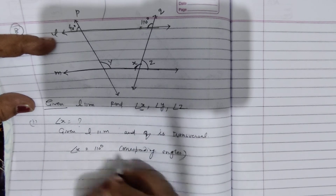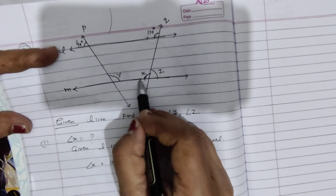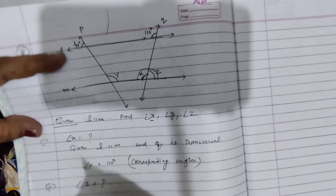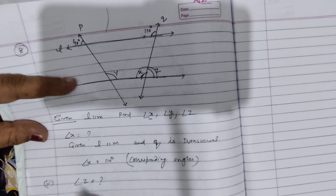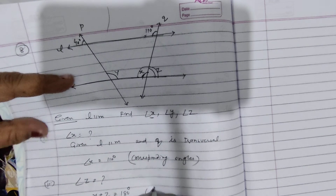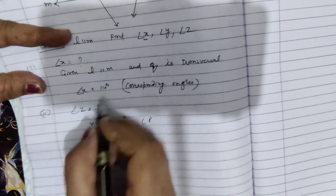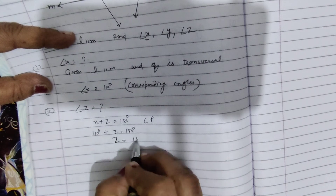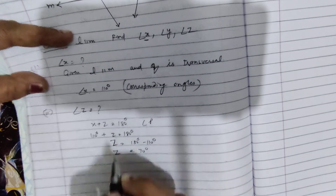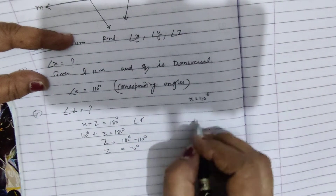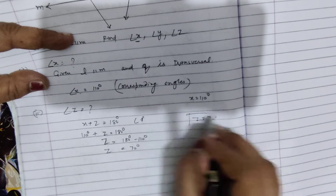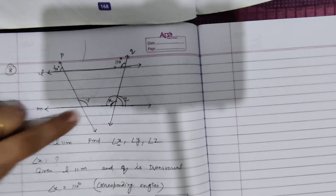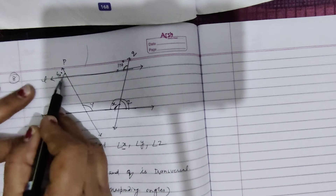Now X and Z form a linear pair. Second part: find Z. X plus Z equals 180 degrees — linear pair. X is 110 degrees. So Z equals 180 minus 110, that is 70 degrees. So X is equal to 110 degrees and Z is equal to 70 degrees. Both angles found from transversal Q.